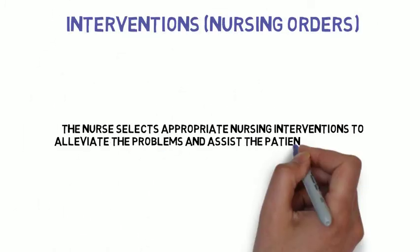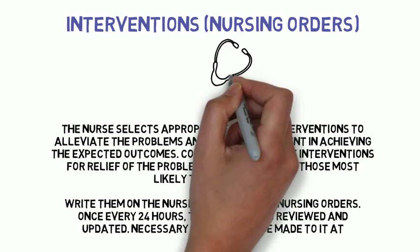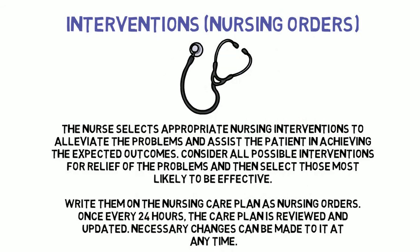Interventions and nursing orders. The nurse selects appropriate nursing interventions to alleviate the problems and assist the patient in achieving the expected outcomes. Consider all possible interventions for relief of the problems, then select those most likely to be effective. Write them on the nursing care plan as nursing orders. Once every 24 hours, the care plan is reviewed and updated, though necessary changes can be made at any time.